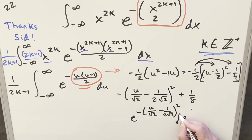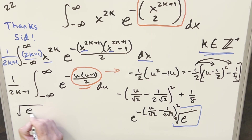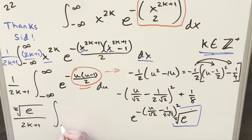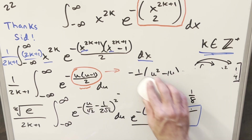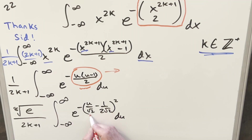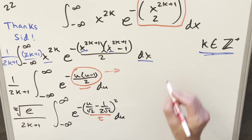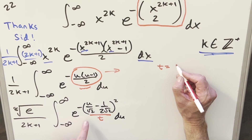For e to the one-eighth, let's write it as e to the 1/8 — the eighth root of e — which is purely a constant I can bring out front. So the integral becomes (eighth root of e) over (2k+1) times the integral. Now I'll make one more substitution: set t equal to (u over root 2 minus 1 over (2 root 2)). The derivative gives dt equal to (1 over root 2) du, so du equals root 2 dt.